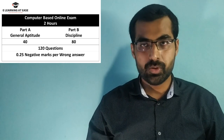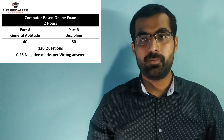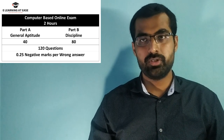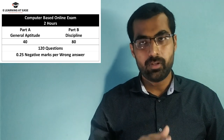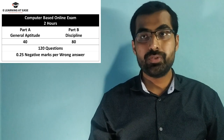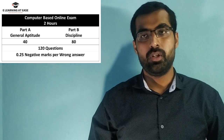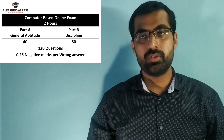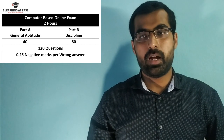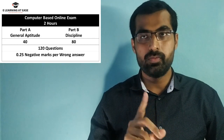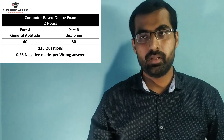In Part B, there are 80 questions from your selected discipline. They have issued notification for 10 departments. If you are applying for mechanical, questions from the mechanical department will come. If you are applying for any other department, questions from that particular department will come in the Part B section.